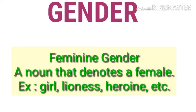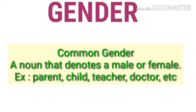The third kind of gender is common gender. It denotes both male or female in common. For example, the word 'parent' — if I utter the word parent, it may be a mother or a father. So this word is used in common, and therefore it is known as common gender.